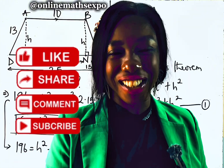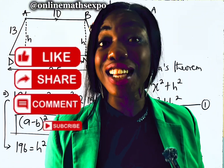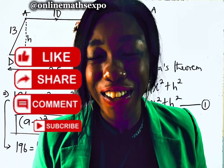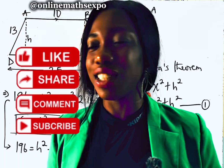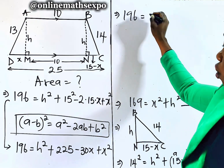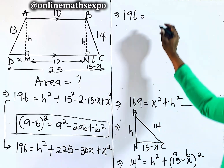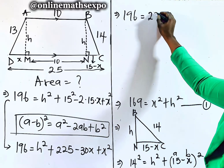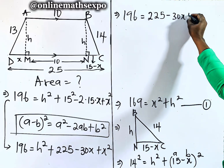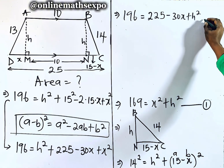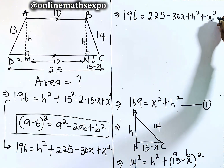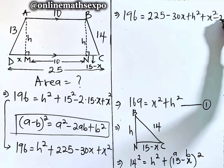Don't forget to give this a like and share with your friends — let us know what you feel about this class in the comments. Thank you, and let's keep going. So we have 196 equals 225 minus 30x plus x squared plus h squared. Let's call this equation 2.